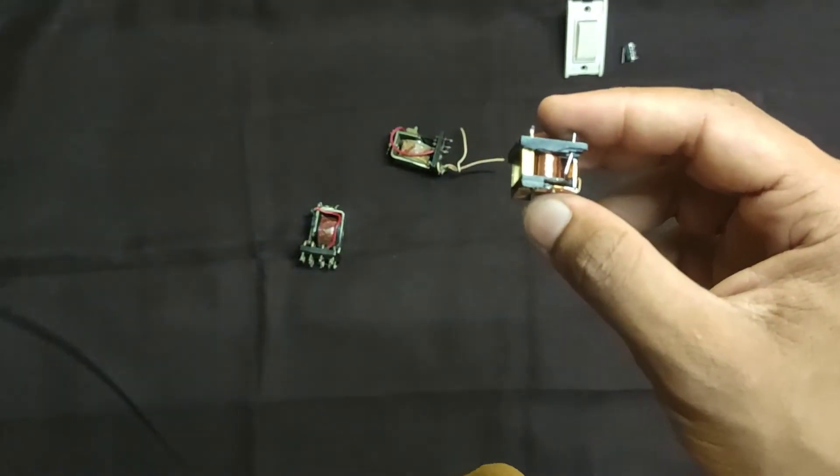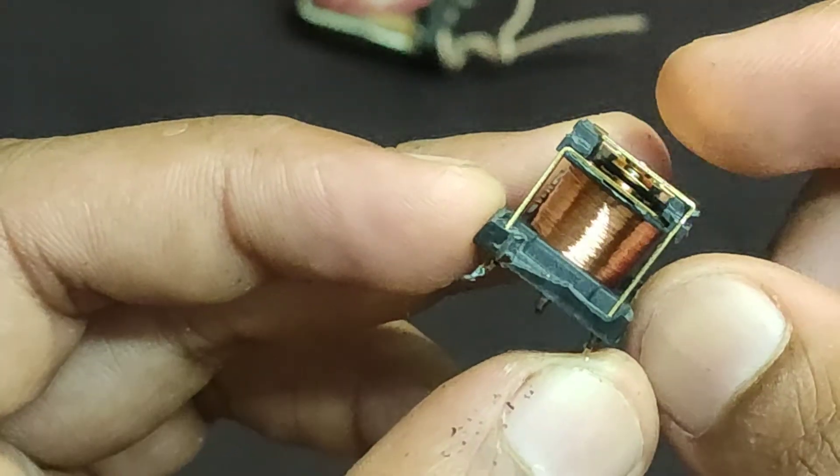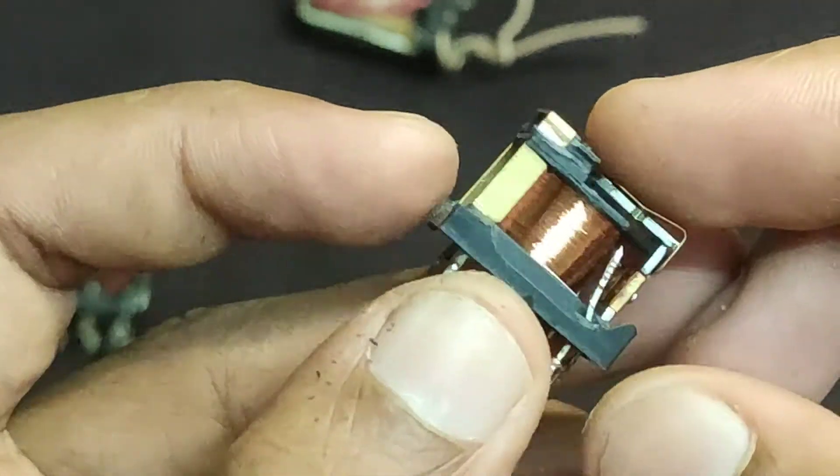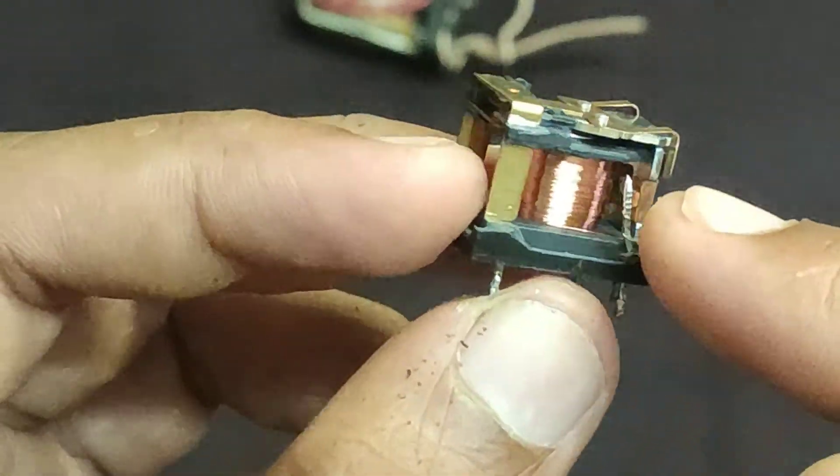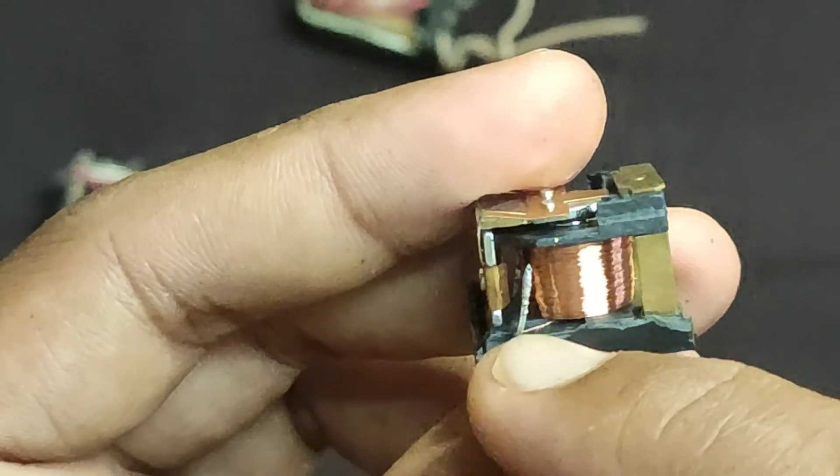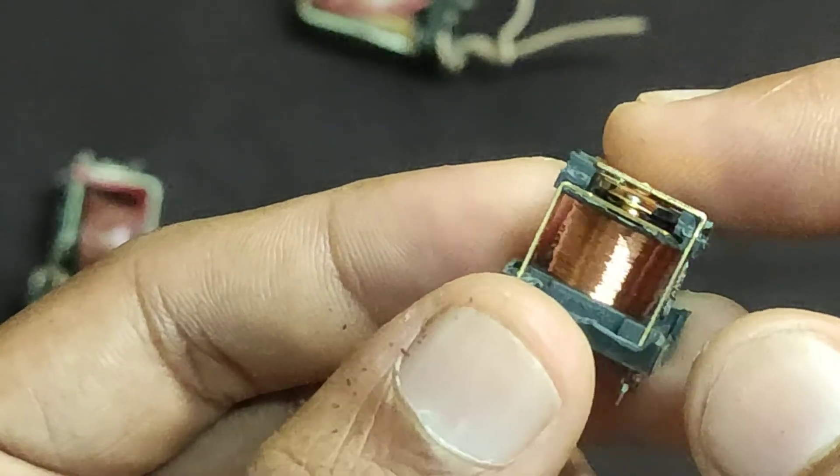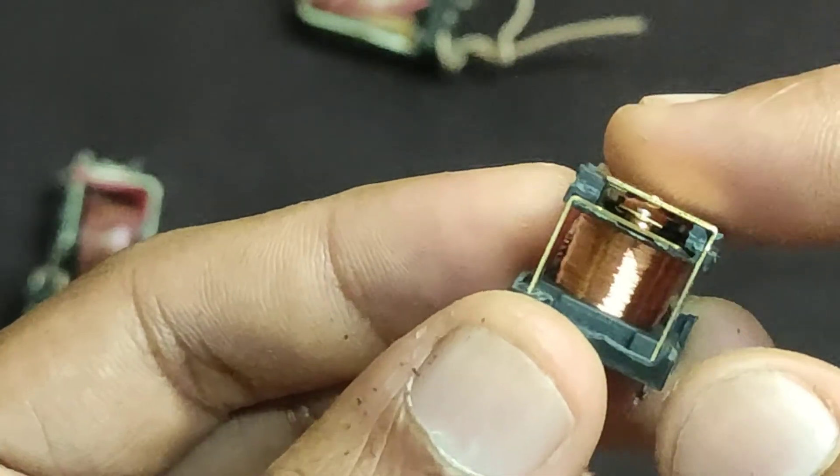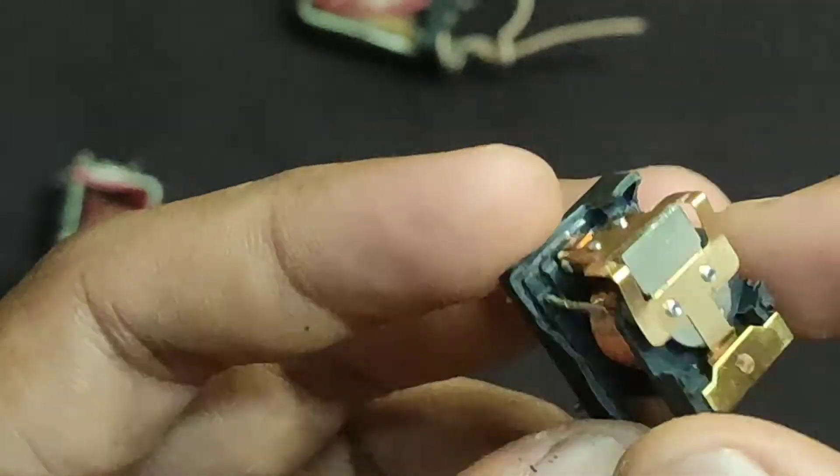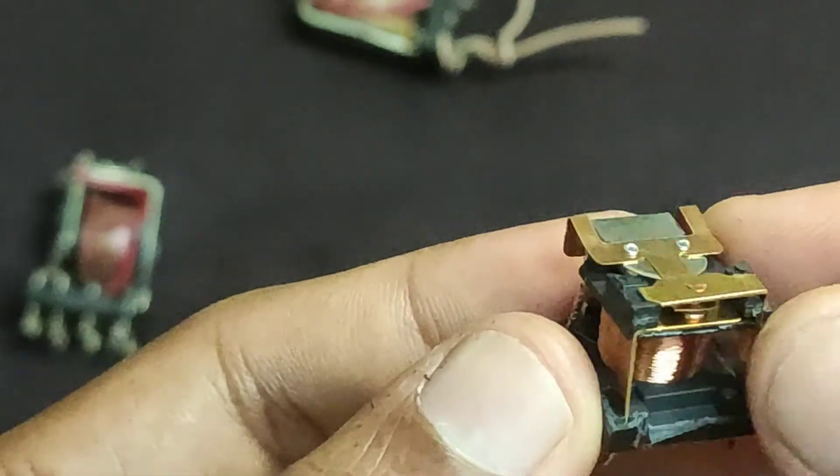When we energize the coil, it produce magnetic field, and that magnetic field will pull the iron contact towards it. You can see, like this. And the winding is connected here, and the other terminal is connected here. And the two contacts are connected here.